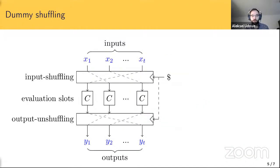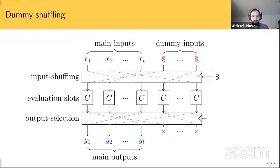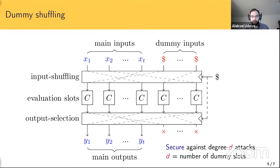As the main result of this work, extending basic shuffling with dummy slots is shown to be necessary and sufficient for protecting against algebraic attacks of any predetermined degree. Starting from basic shuffling, dummy shuffling adds a few dummy inputs chosen independently and uniformly at random. This is proven sufficient to provide security against algebraic attacks of degree up to d, where d is the number of dummy slots. The proof is done in the security model presented at Asiacrypt 2018.